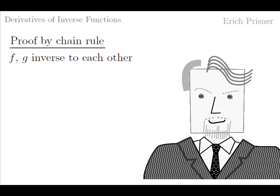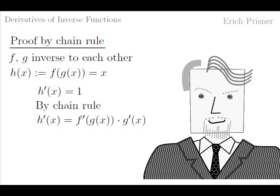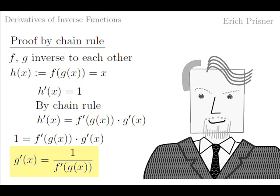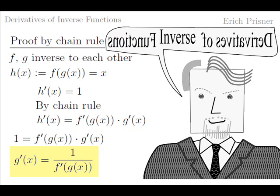For the others, let me quickly demonstrate how the chain rule formula immediately implies our result. Let f and g be inverse to each other, meaning f of g of x equals x. So the derivative of this composed function h of x equals f of g of x is just 1. But by the chain rule it is also equal to the product of outer derivative f prime of g of x and inner derivative g prime of x. Thus f prime of g of x times g prime of x equals 1, and g prime of x equals 1 over f prime of g of x. Thank you for your attention.